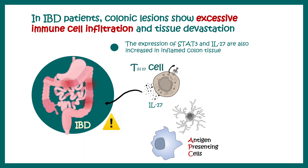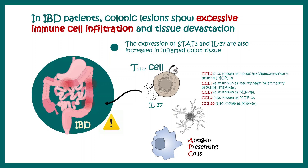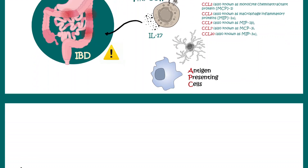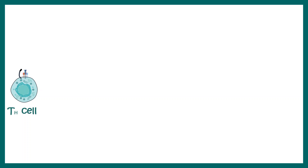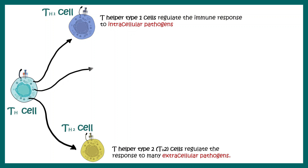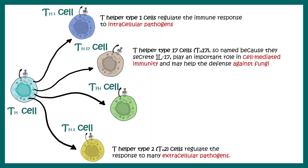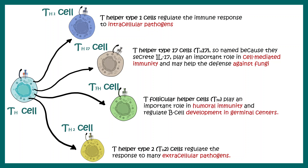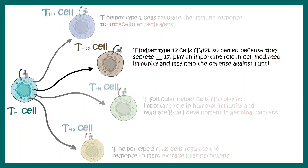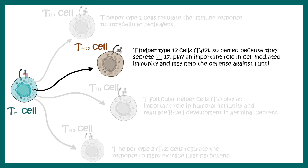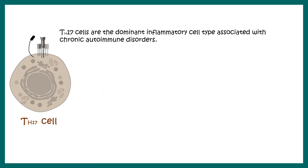Antigen presenting cells also take part in this process, and several chemokines such as CCL2 and CCL3 to CCL20 contribute to the overall pathophysiology of IBD. T helper cells can be subdivided into many groups such as TH1 cells, which are also inflammatory in nature, TH2 cells, TH17 cells, and T follicular helper cells, among others. TH17 cells are the key focus in inflammatory bowel disease.